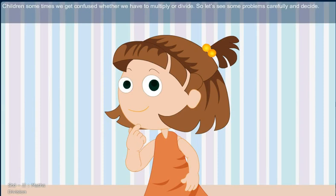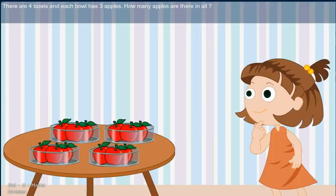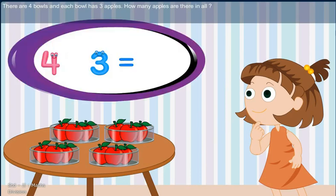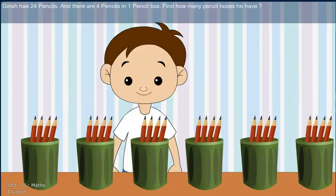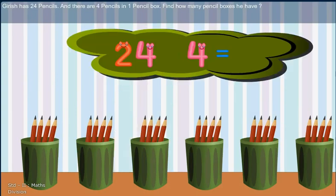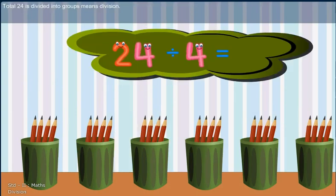Children, sometimes we get confused whether we have to multiply or divide. So let's see some problems carefully and decide. There are 4 bowls. And each bowl has 3 apples. How many apples are there in all? Fruit in all bowls. Girish has 24 pencils. And there are 4 pencils in 1 pencil box. Find how many pencil boxes he have. Total 24 is divided into groups means division.